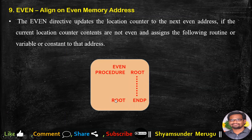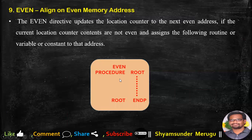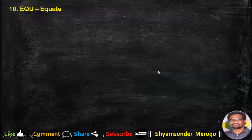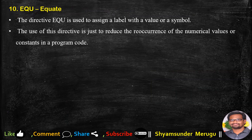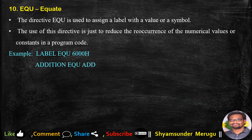EQU stands for Equate. The EQU directive is used to assign a label with a value or a symbol. Its purpose is to reduce the reoccurrence of numerical values or constants in a program. For example, 'label EQU 6000H' and 'addition EQU ADD'.